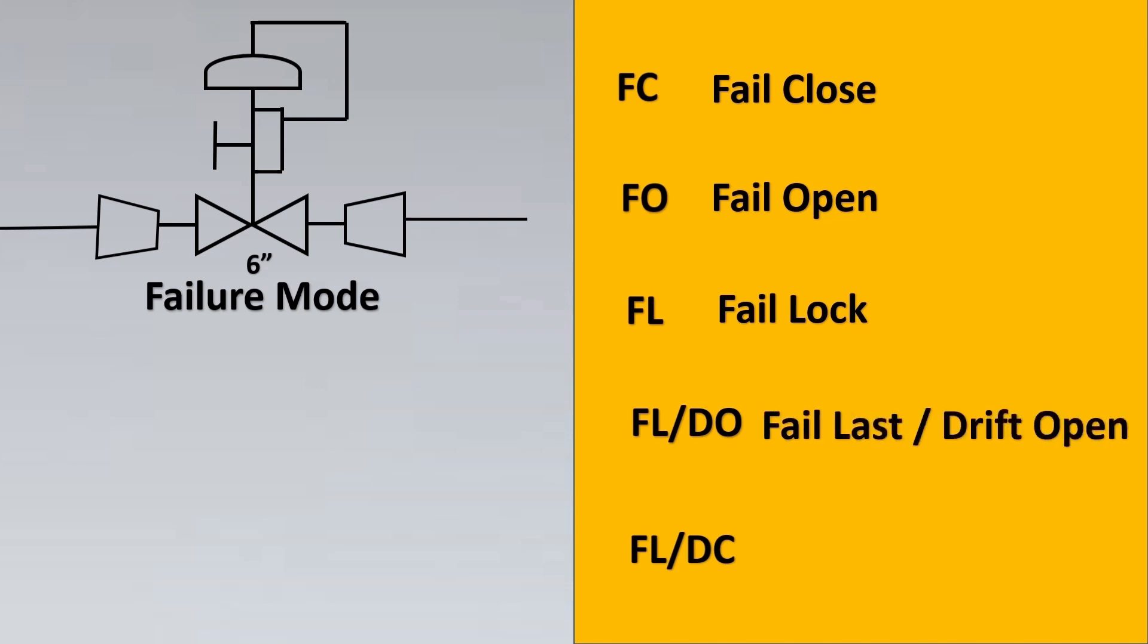It will not move either. If it is in the halfway position it will remain in the halfway position. This is achieved sometimes via check valve. Now FL/DO stands for fail last drift open. Remember this is different from fail lock, because in fail last position it will just remain wherever it was and eventually with the help of flow it will drift to its open position.